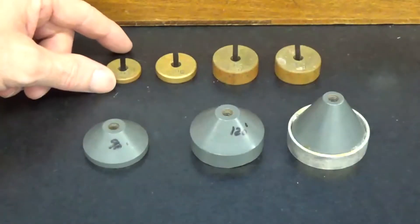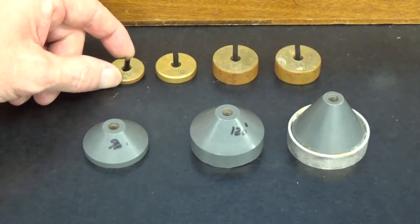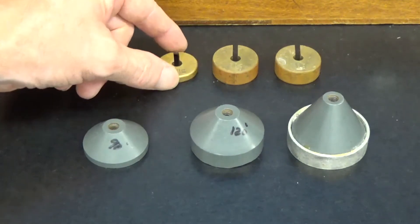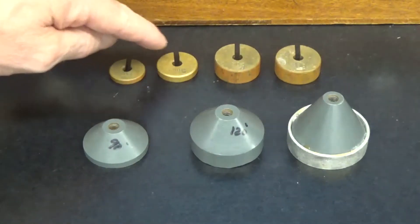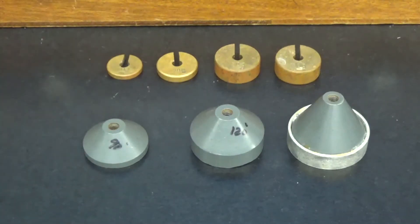Up here we have our masses. This is a 10 gram mass, a 20, and two 50s. These are the masses that we're going to use to balance our target. Let's take a look at the apparatus.